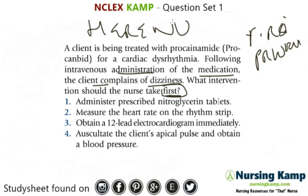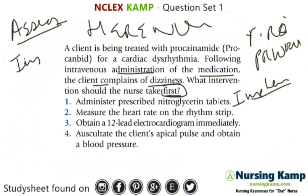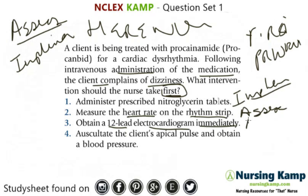The answer options are: administer prescribed nitroglycerin — that is an implementation because we're doing something. Measure the heart rate on the rhythm strip — that is an assessment. Obtain a 12-lead ECG immediately — that's also an assessment but also an implementation. Auscultate apical pulse and obtain blood pressure — another assessment.